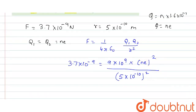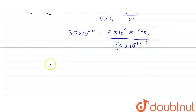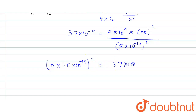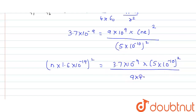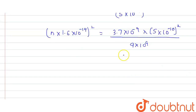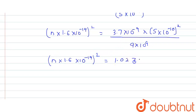We substitute the value of e: (n × 1.6 × 10⁻¹⁹)² equals 3.7 × 10⁻⁹ × (5 × 10⁻¹⁰)² divided by 9 × 10⁹. Solving the right-hand side — squaring 5, multiplying by 3.7, dividing by 9, and adjusting the powers — gives 1.027 × 10⁻³⁷.